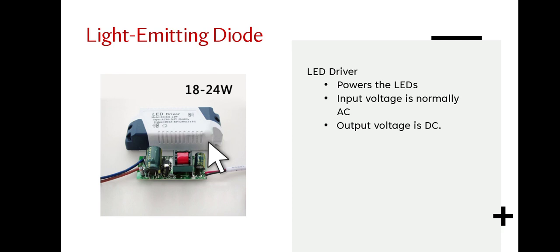Powering an LED lighting circuit requires an LED driver. This is a device that regulates the power applied to maintain reliable performance. LED drivers can be either constant current or constant voltage. The input voltage of an LED driver is usually in the form of AC with output voltage applied to the LED in the form of DC.